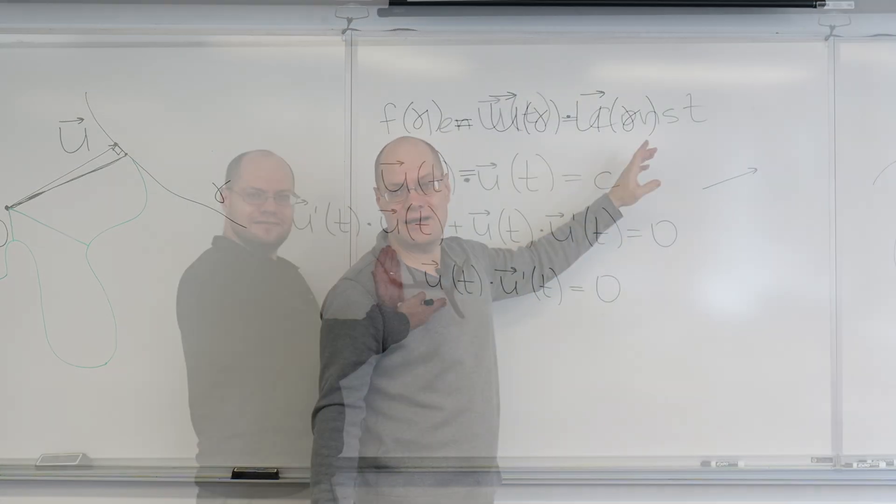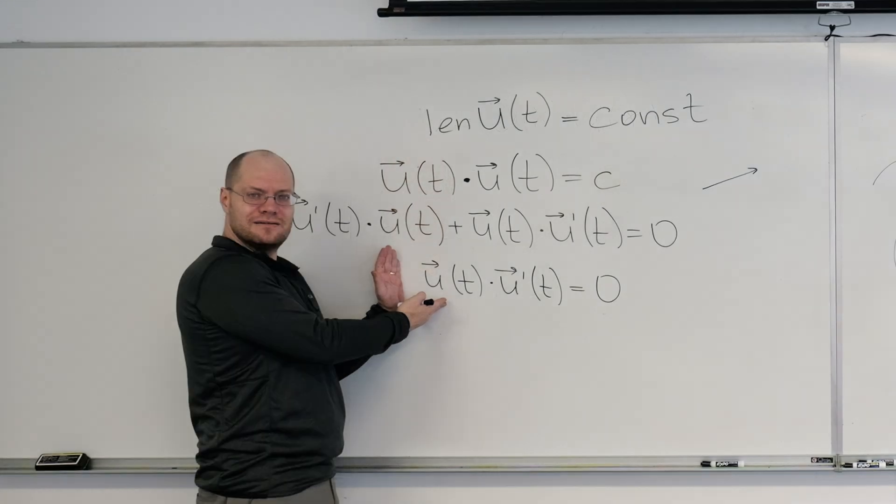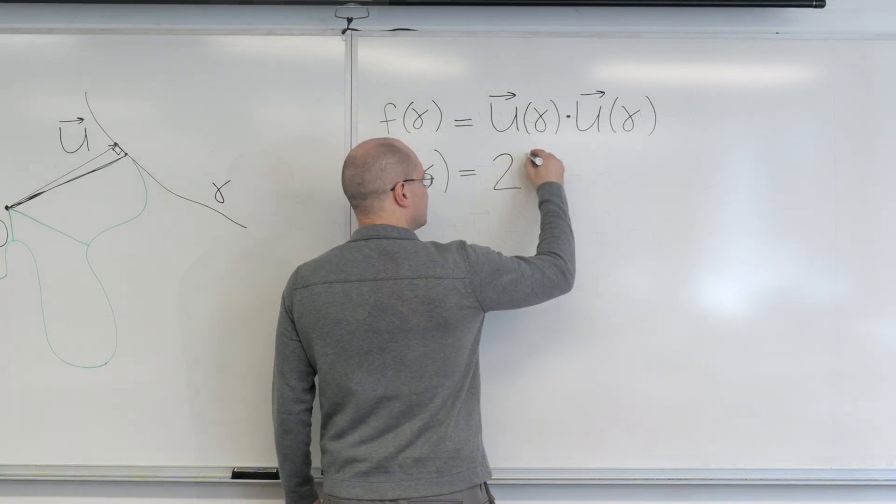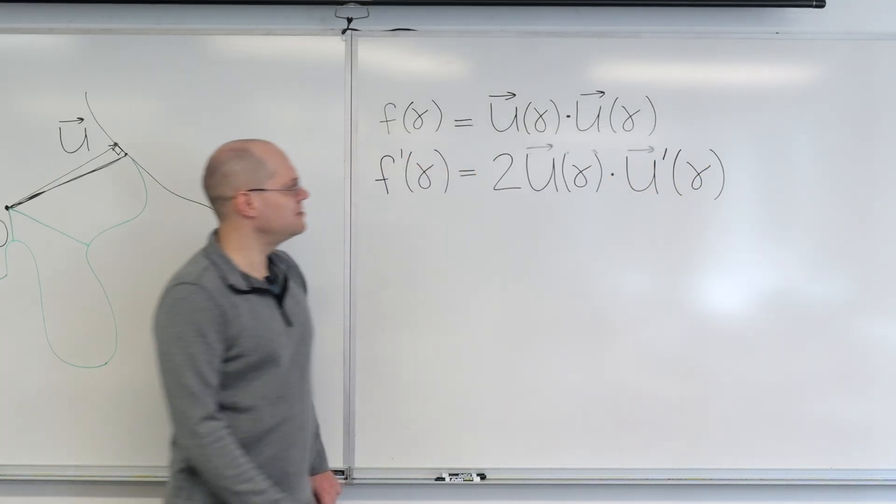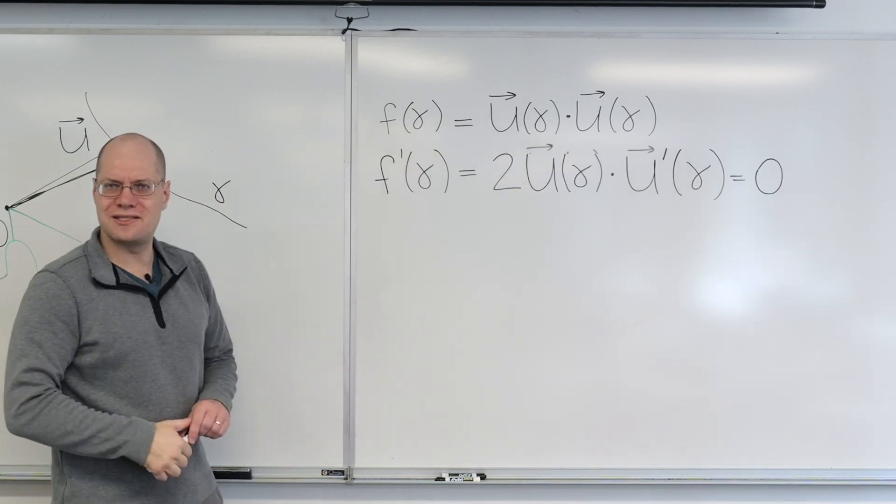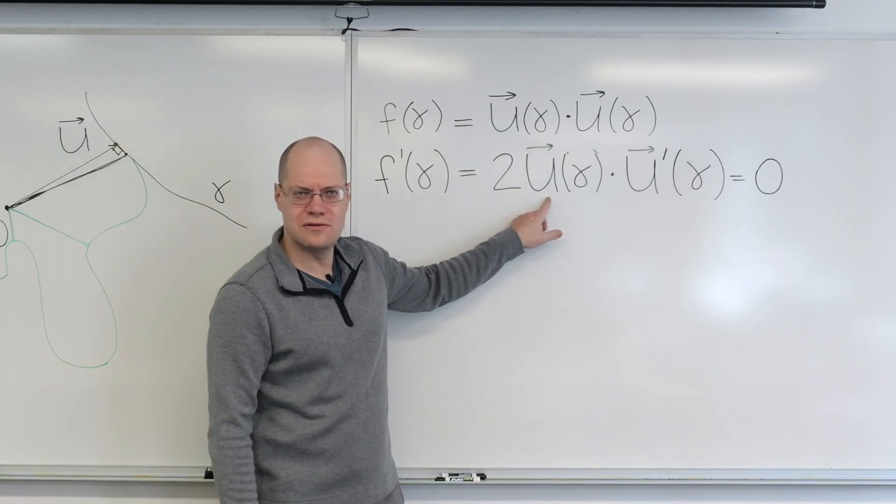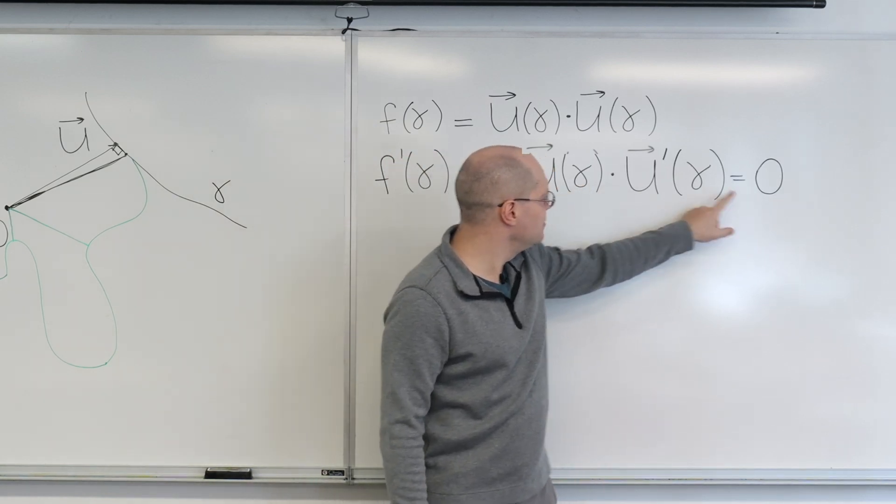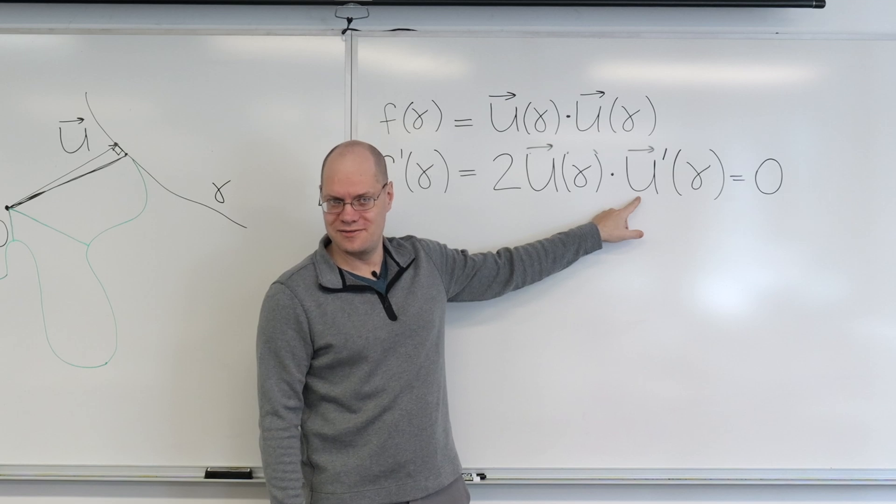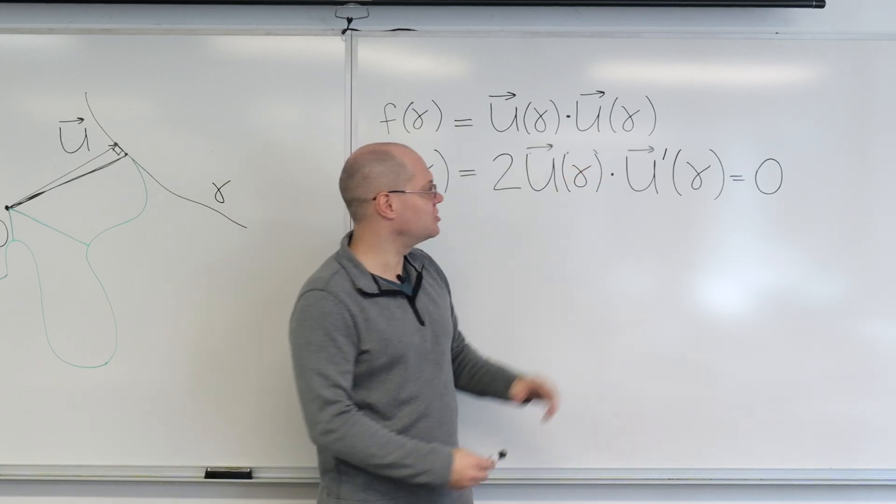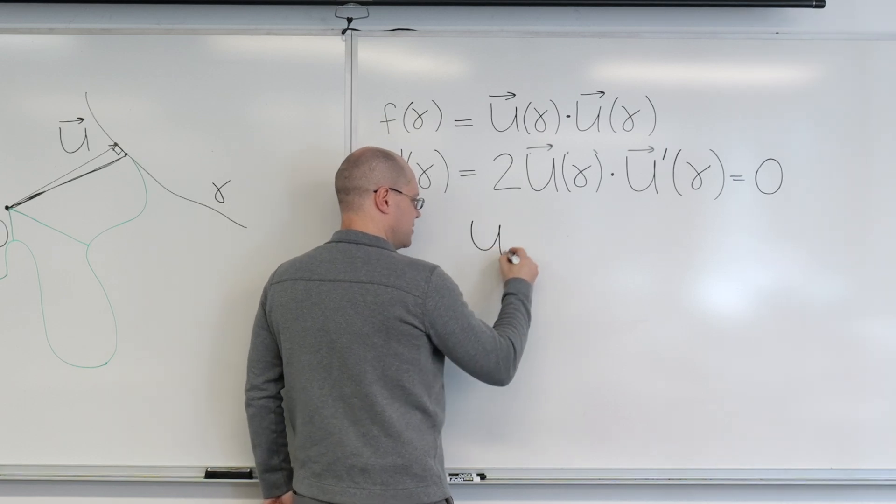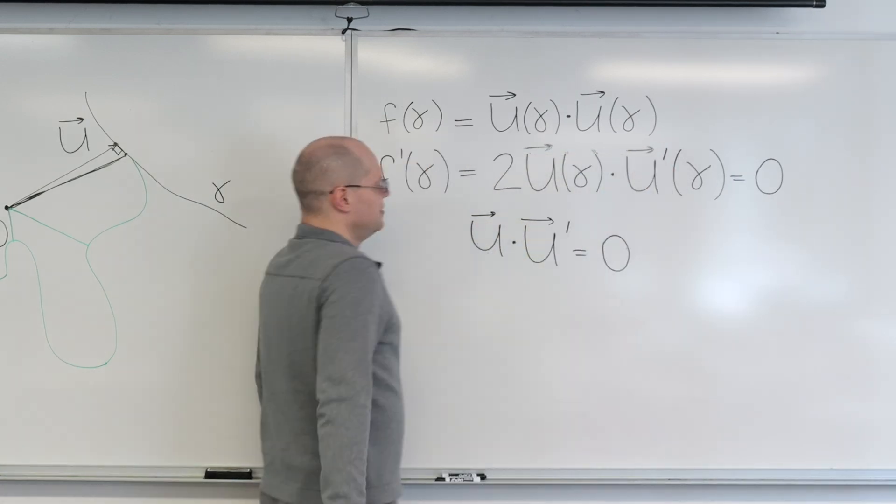And so, we have U prime gamma dotted with U plus U dotted with U prime gamma. I'm only saying it and not writing it because we've done it before. Which, the two terms are the same by commutativity. So, we have 2 U dotted with U prime and we need to equate this to zero. And what does this tell you? It tells you that U is orthogonal to U prime. You guys are with me? So, that's the answer. Well, the answer is really this. I'll drop the argument. U dotted with U prime equals zero.